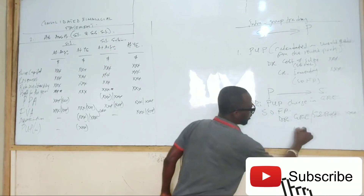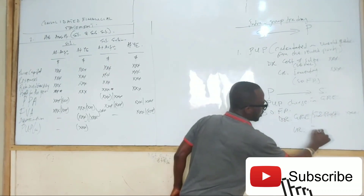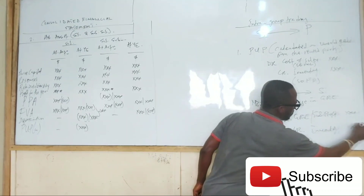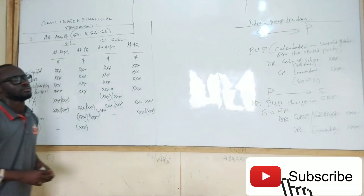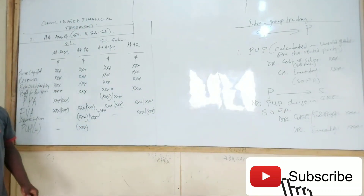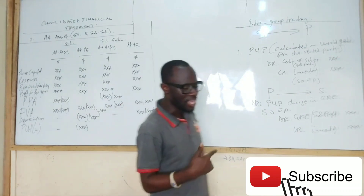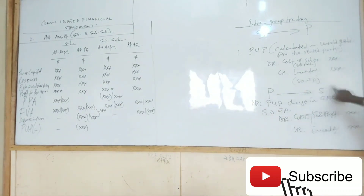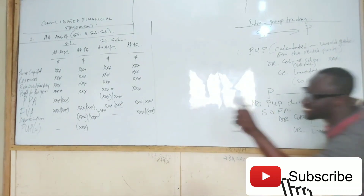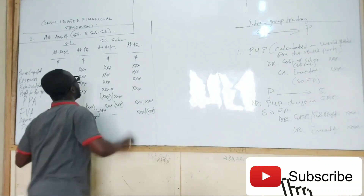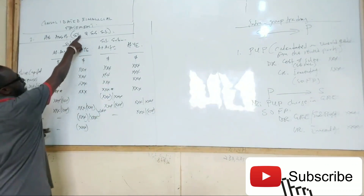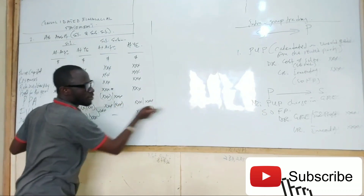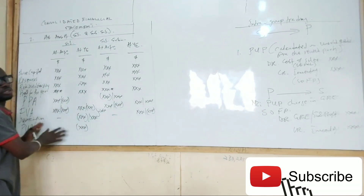Credit inventory — as I mentioned, this is what you must understand about PUP. If the parent is the one selling, please don't be tempted, because remember what I did here for net assets of sub — you don't bring parent issues here.